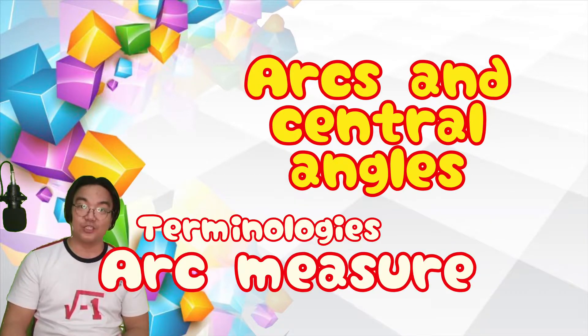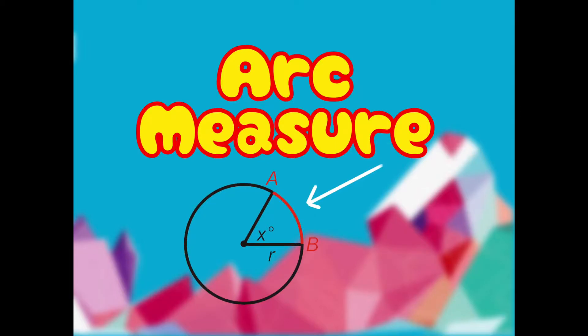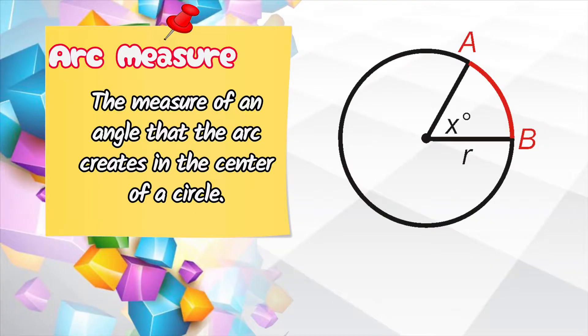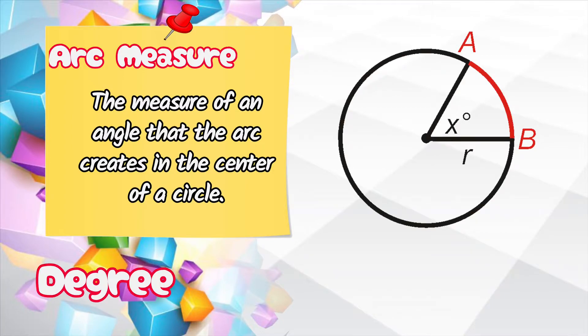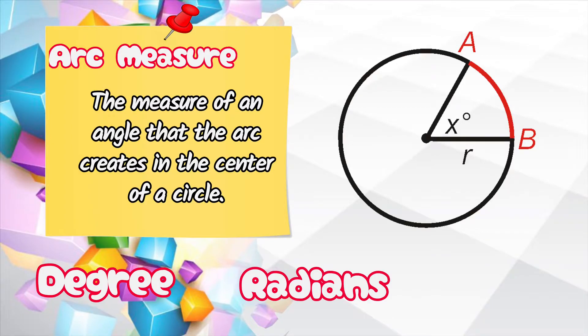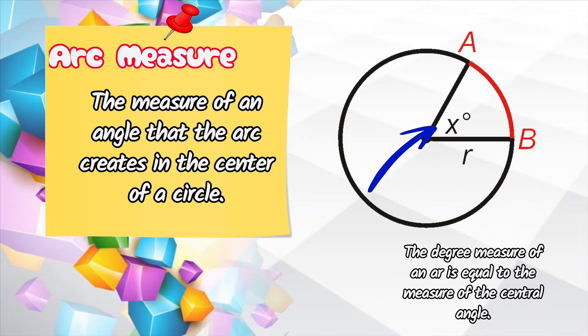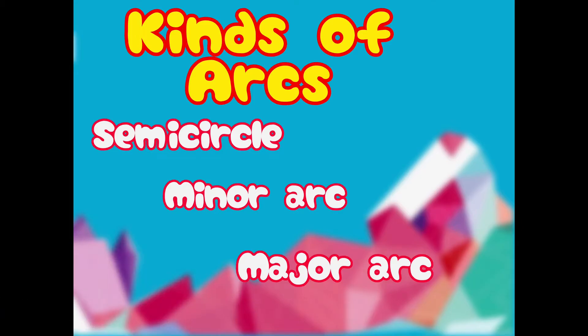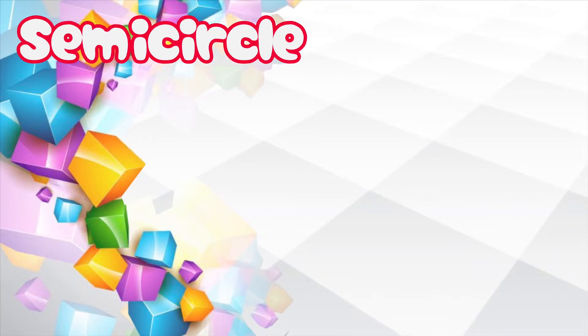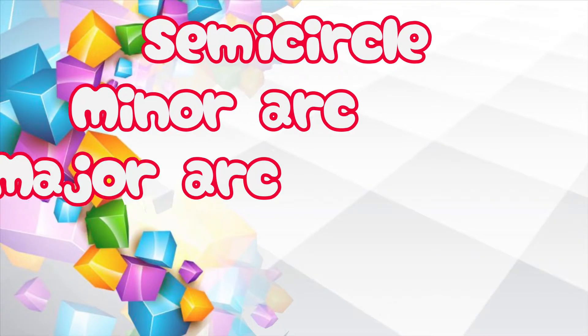An arc measure is the measure of an angle that the arc creates in the center of a circle. This measure can be given in degrees or radians. The degree measure of an arc is equal to the measure of the central angle. There are three kinds of arcs: semicircle, minor arc, and major arc.